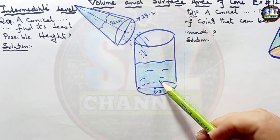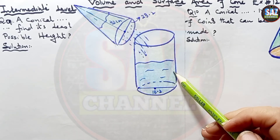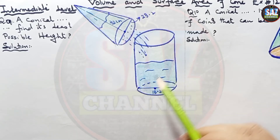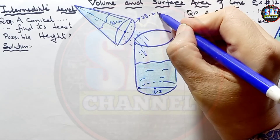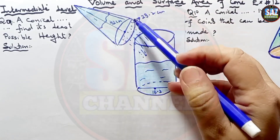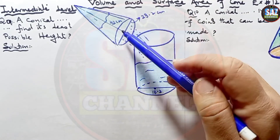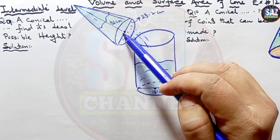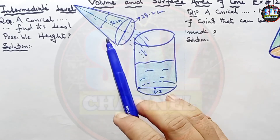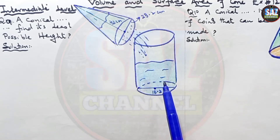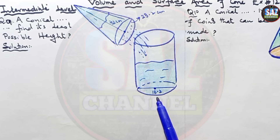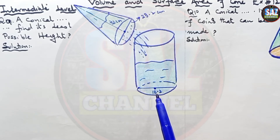Let's try to understand the question with the help of a diagram. We have a conical funnel with diameter 23.2 cm, containing water filled to the brim. The depth of water in the cone is 42 cm, and water from this cone is poured out into a cylindrical tin which has a diameter of 16.2 cm. We have to find the depth of water in the tin.